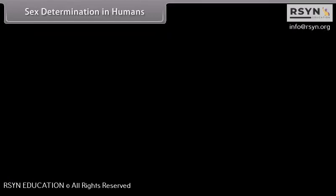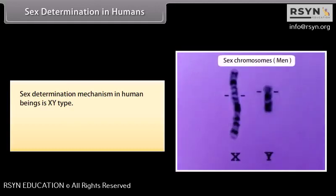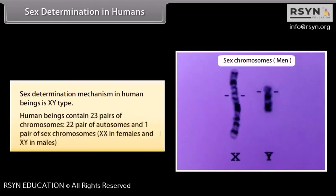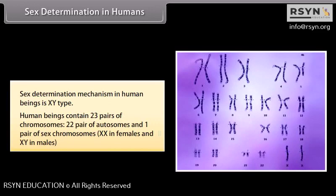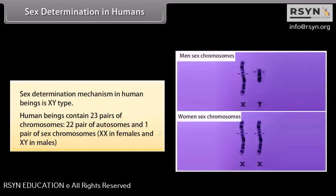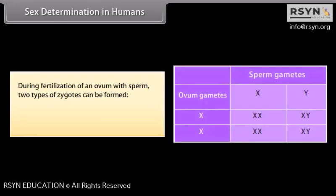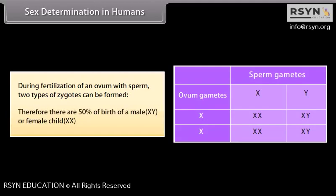Sex determination in humans follows the XY type. Human beings contain 23 pairs of chromosomes: 22 pairs of autosomes and one pair of sex chromosomes — XX in females and XY in males. During fertilization of an ovum with sperm, two types of zygotes can be formed, resulting in 50% probability of a male (XY) or female (XX) child.